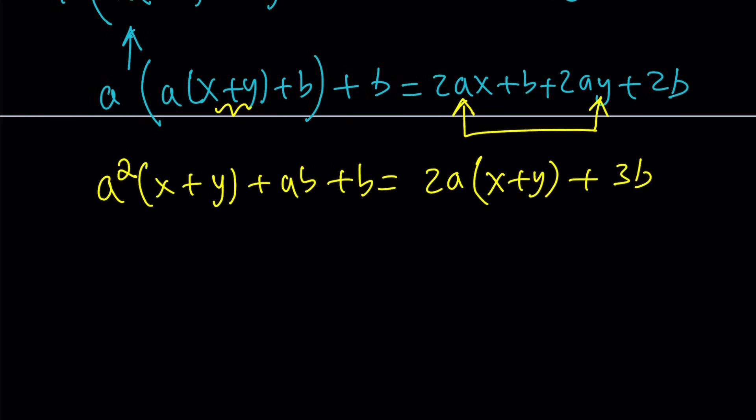From here, what do we get? We have to compare the coefficients of x+y and the constants, because this is true for all x and y values such that x and y are integers. So a and b must be specific values that satisfy this. In other words, the coefficient of x+y is a² here, but that's also 2a. So a² = 2a, which gives us a=0 or a=2.